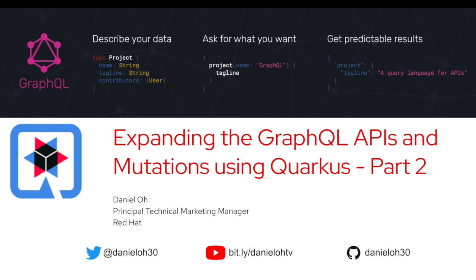Welcome back everybody. This video showcases how to expand a GraphQL API and how to add mutation ability using Quarkus. If you haven't watched the first video on how to consume a GraphQL API using a Quarkus application, please watch that first, because we're going to use the same application to develop new capability. My name is Daniel Rowe, I'm working for Red Hat as a technical marketing manager. Let's get started.